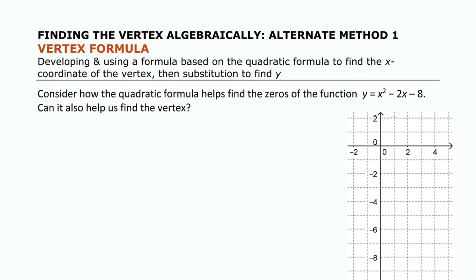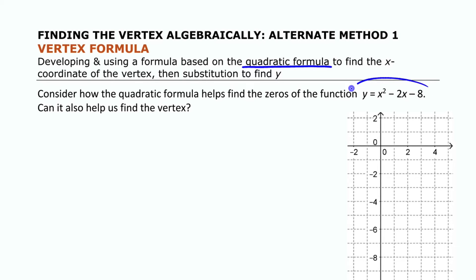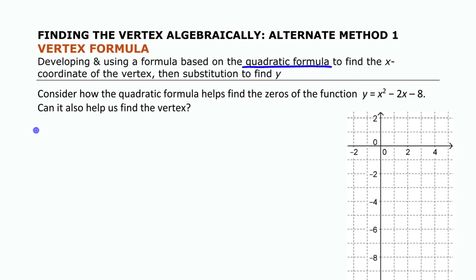To look at an alternate way of finding the vertex of a quadratic function in standard form — other than completing the square and putting it into vertex form — we'll develop a little formula that comes from the quadratic formula and gives the x-coordinate of the vertex. We're going to start by looking for the x-intercepts, and then from that we'll see how we can use a shortcut to find the vertex.